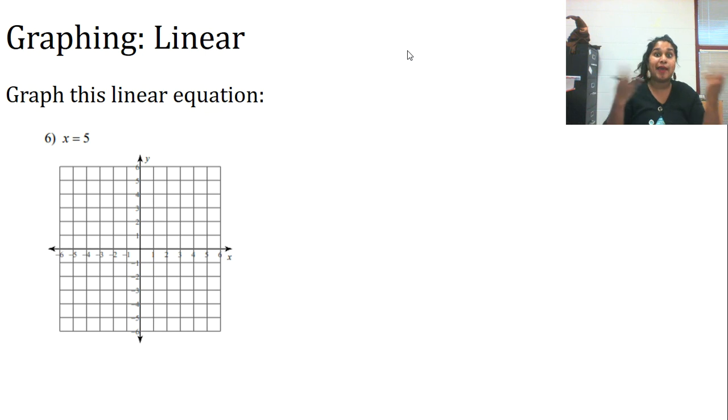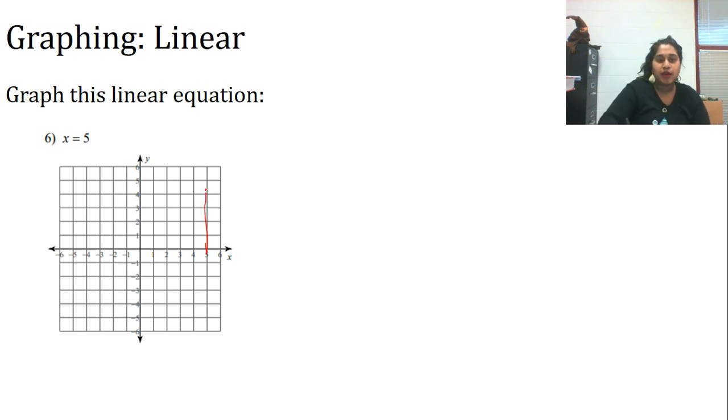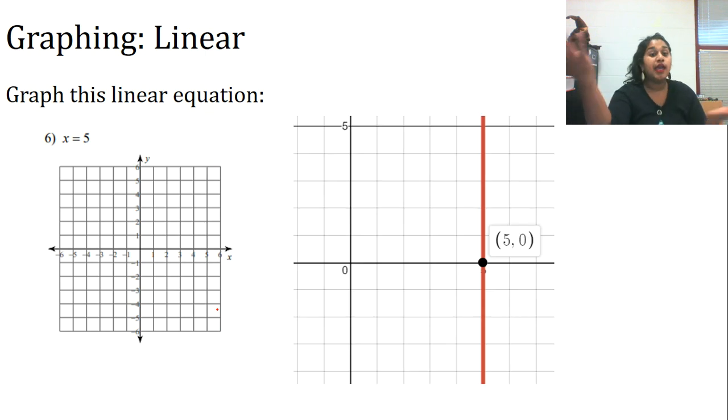So if x = 5, I already know it's going to be a vertical line right there. Let's check — and voilà, there it is.